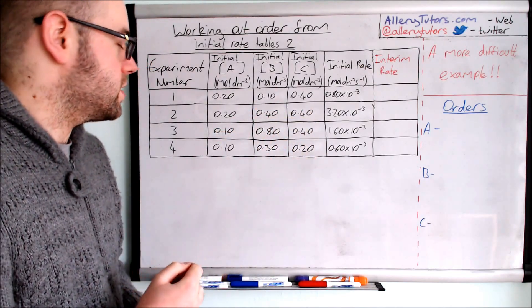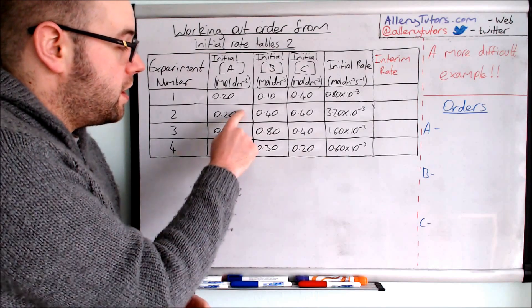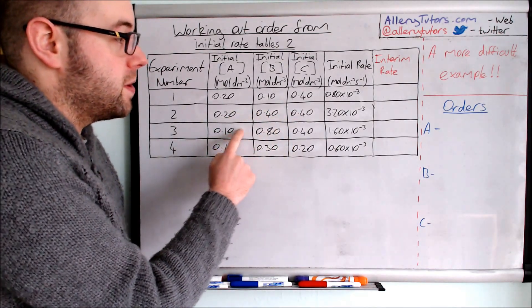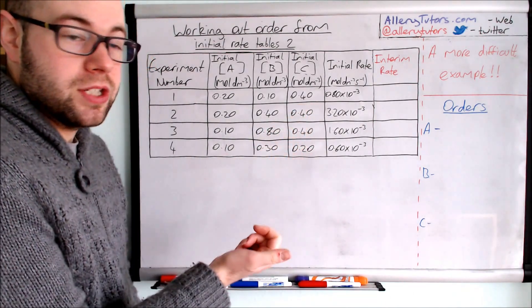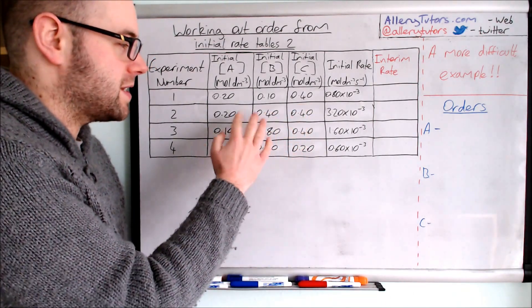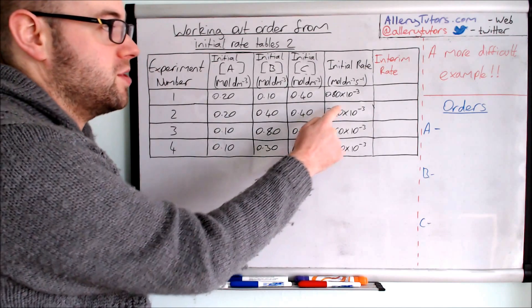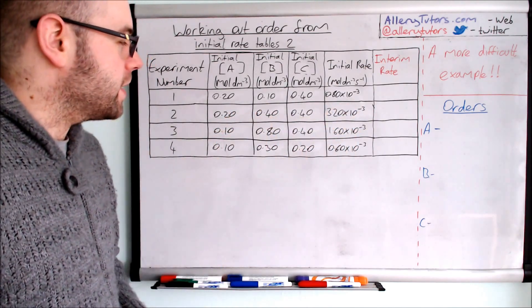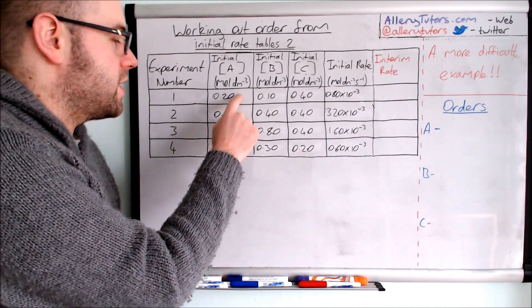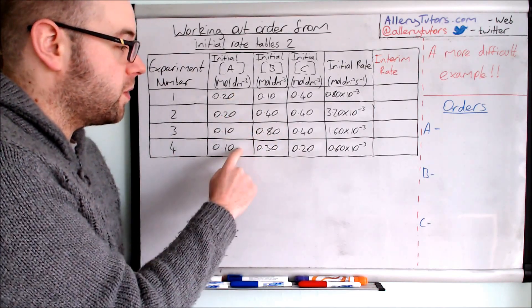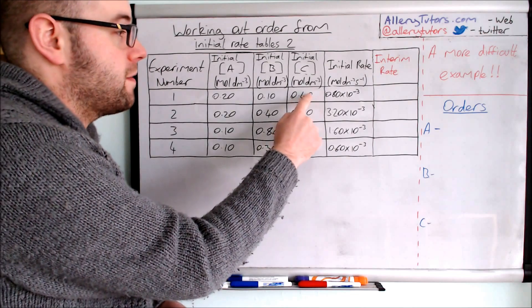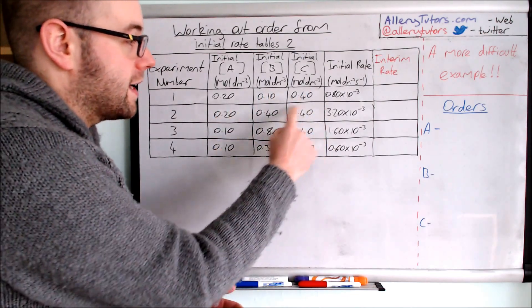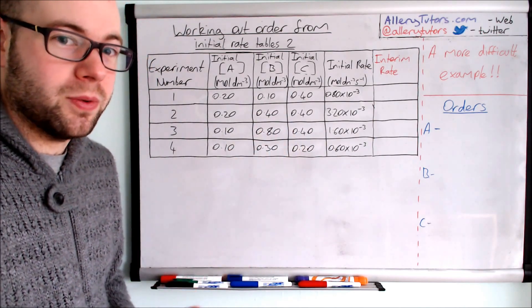If we look at A, this one is changing, it's actually halving here, but C is remaining constant which is good, but B isn't. We can't really tell if the change in rate is caused by A or B because B is changing as well. If we pick one and four, C is changing and B is changing. Two and four, again C is changing so B is changing, so that's going to be quite difficult to work out A.